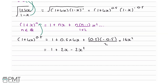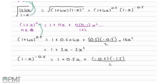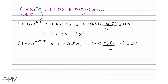Now for 1 minus x to the power of minus 0.5, this equals 1 plus minus 0.5 times minus x, which gives positive 0.5x, plus minus 0.5 times minus 1.5 all over 2, times x squared. Simplifying: minus 0.5 times 1.5 is 0.75, divided by 2 is 0.375, so we get 1 plus 0.5x plus 0.375x squared.